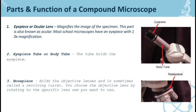Number two is the eyepiece tube or the body tube. The tube holds the eyepiece. Makikita natin sa images na yung eyepiece or the ocular lens na nasa ibabaw, and the eyepiece tube or body tube is connected for the eyepiece tube to hold the ocular or the eyepiece.